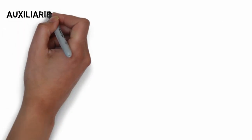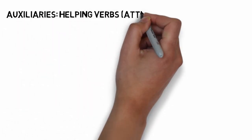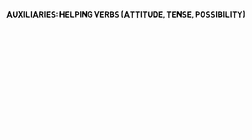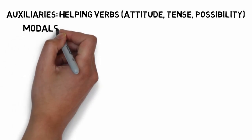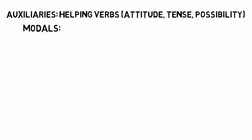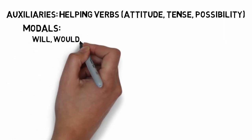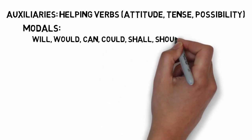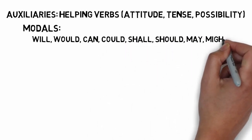Auxiliaries are a class that allow us to build helping verbs and add meaning about attitude or how something is done. In English, we have modal auxiliaries which tell us about how something is done, whether it is completed, or whether it is necessary. These include: 'will' and 'would,' 'can' and 'could,' 'shall' and 'should,' as well as 'may,' 'might,' and 'must.'